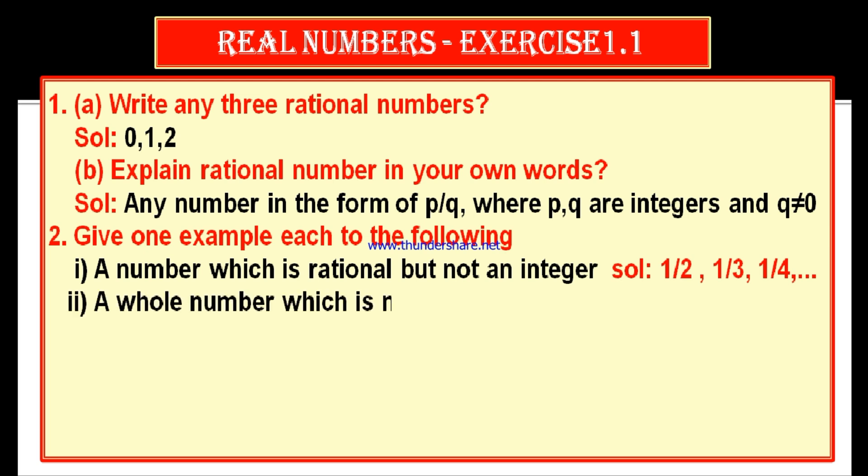Second bit: a whole number which is not a natural number. Natural numbers start from 1: 1, 2, 3, 4 and so on. Whole numbers start from 0: 0, 1, 2, 3, 4 and so on. If we add 0 to the set of natural numbers, we get whole numbers. Therefore, only one whole number is not a natural number — that is 0.